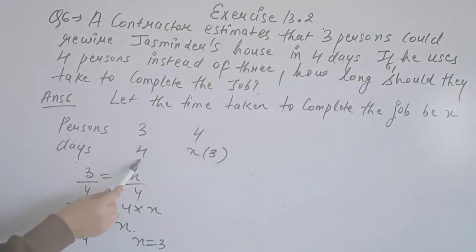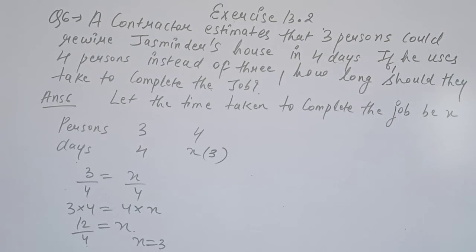And 3 persons would complete the job in 4 days. So if the number of persons is more, they will take fewer days to complete the job. The number of persons and the number of days are inversely proportional.